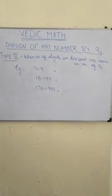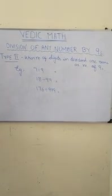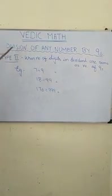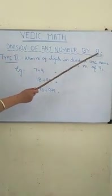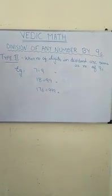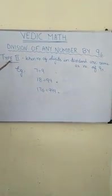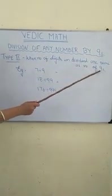Hello students, welcome to our Vedic lecture. It's a continuation lecture. We are dealing here with division of any number by a series of 9. Type 1 was taught to you in the previous lecture. Today we will discuss Type 2 when the number of digits in the dividend are the same as the number of 9s.